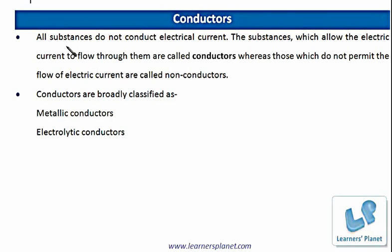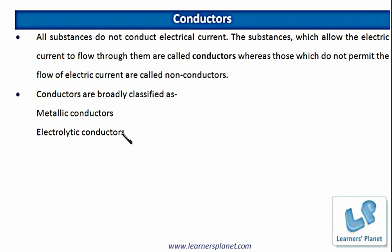All substances do not conduct electric current — for example, wood doesn't conduct electric current. The substances which allow electric current to flow through them are called conductors, whereas those which do not permit the flow of electric current are called non-conductors. Conductors are broadly classified into metallic conductors and electrolytic conductors. Electrolytic conductors are solutions of a salt, acid, or base, which are also good conductors of electricity.